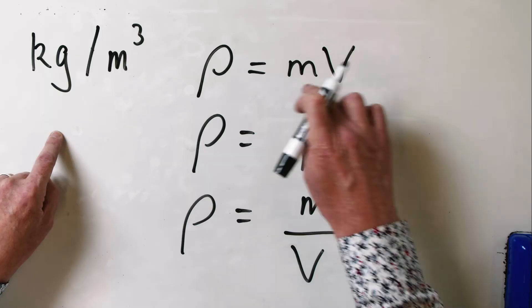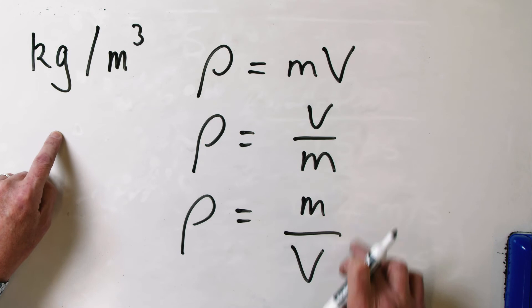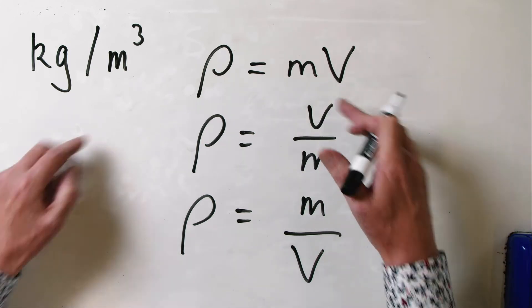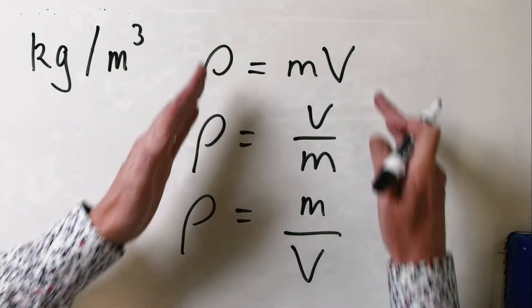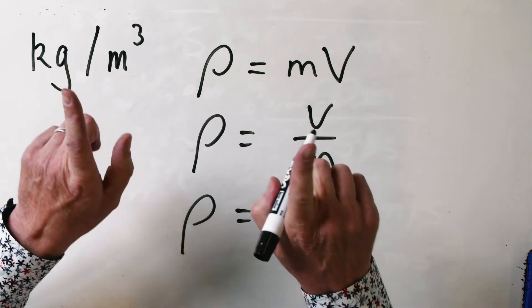What do we need to do? We need to work out what units each of these combinations of volume and mass give us, see which one is correct, and see which of these two are wrong.